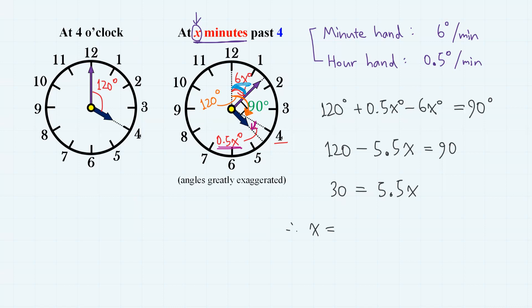Therefore, x equals 30 divided by 5.5, which is 60 over 11 with the unit minutes. Therefore, the hour and minute hands form the right angle for the first time at 60 over 11 minutes past 4.